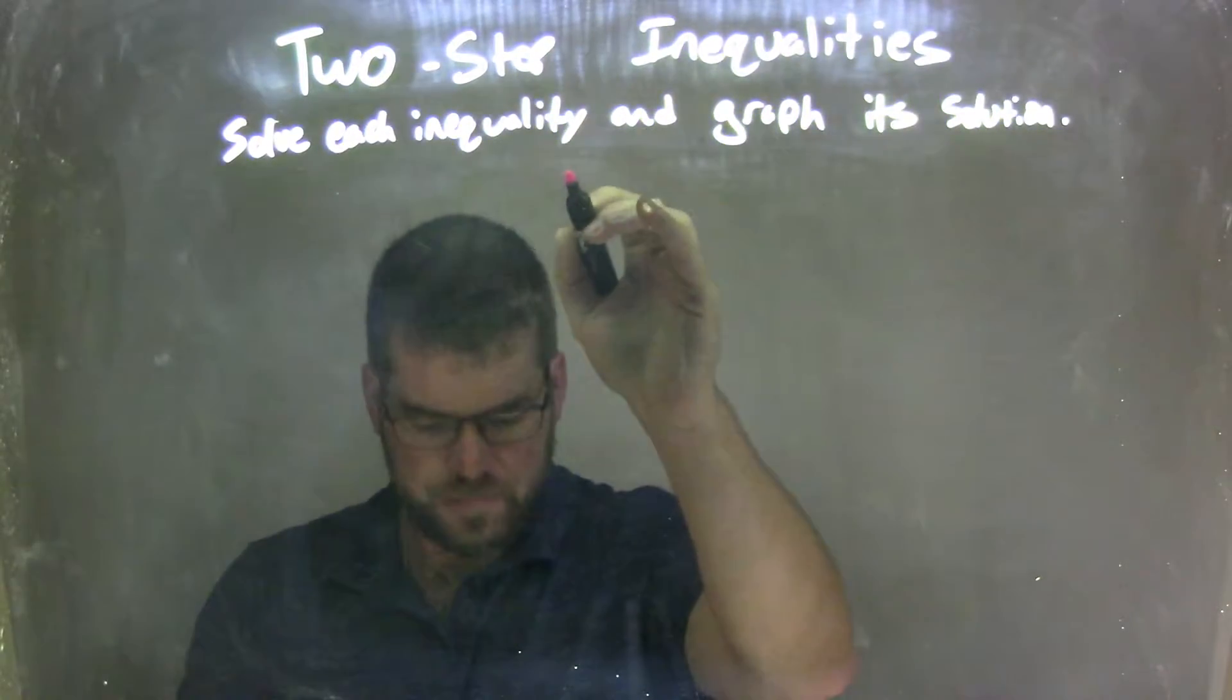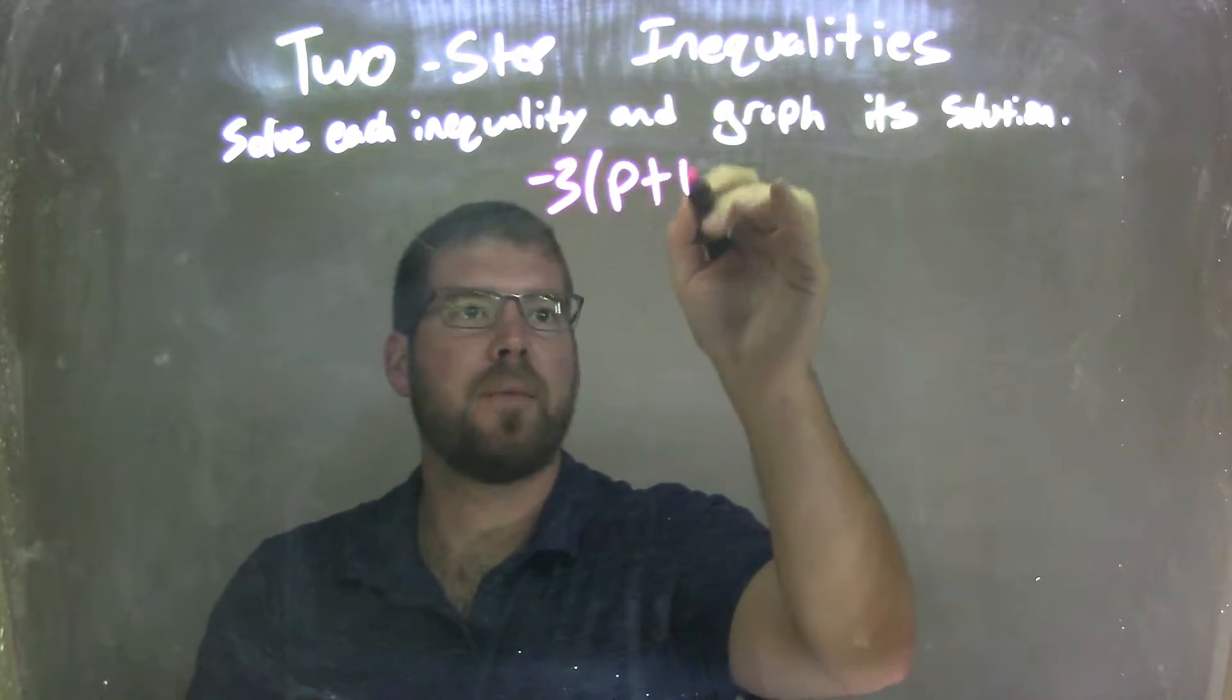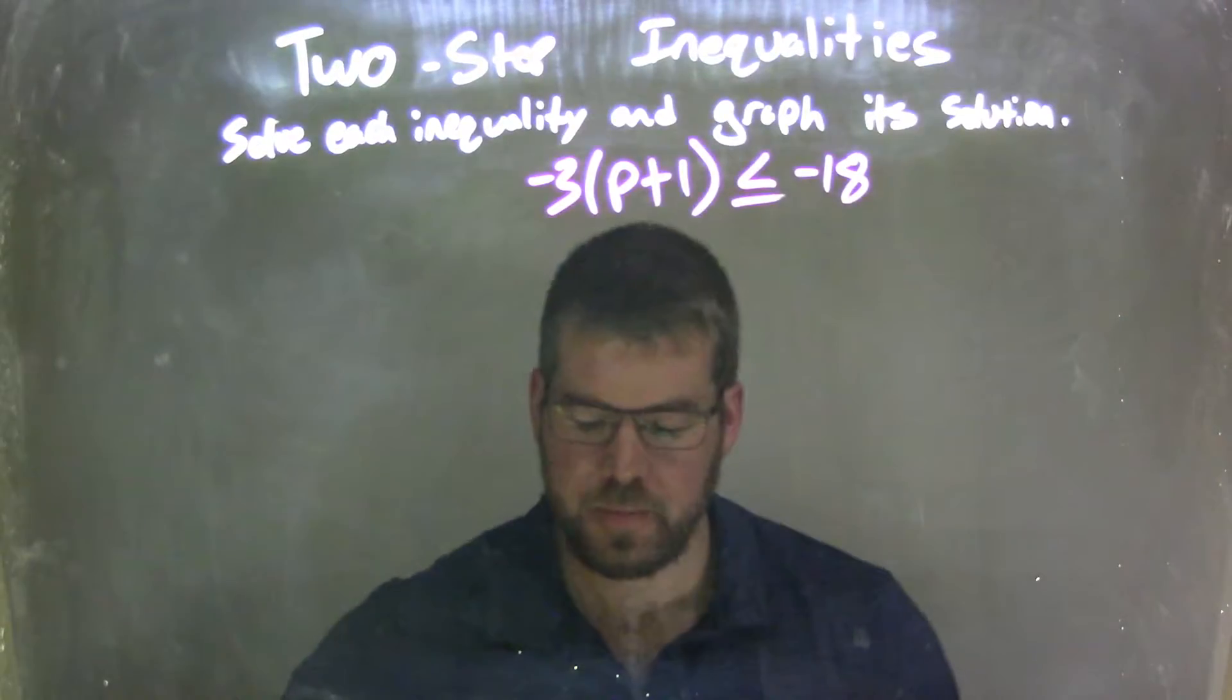So if I was given this inequality: negative 3, parentheses, p plus 1, is less than or equal to negative 18.